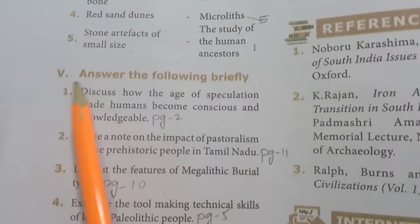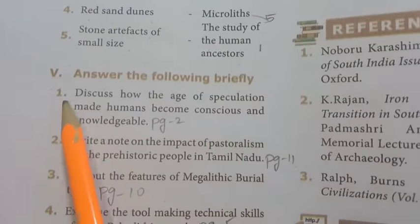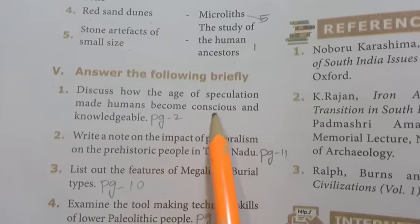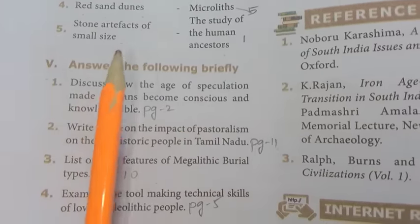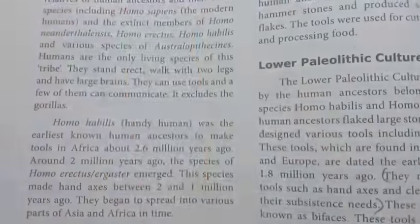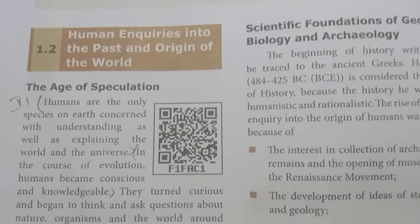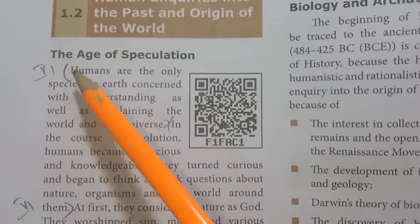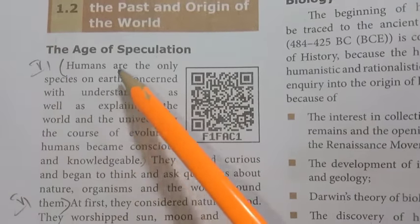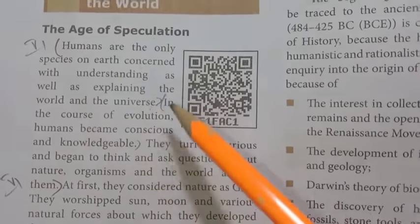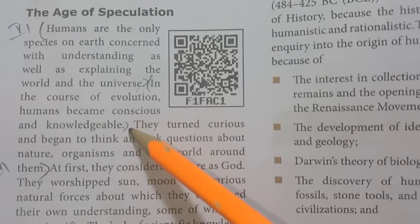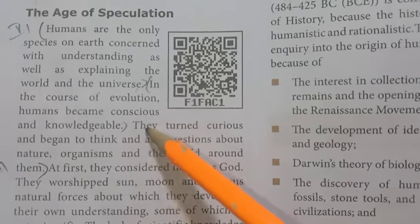Moving to Roman numeral V, Answer the following briefly. First one: Discuss how the age of speculation made humans become conscious and knowledgeable. Turn to page 2. Under the topic 'Age of Speculation,' start from 'humans are the only species on earth.' First point: in the course of evolution, humans became conscious and knowledgeable. Second point: they turned curious and began to think and ask questions about nature, organisms and the world around them.